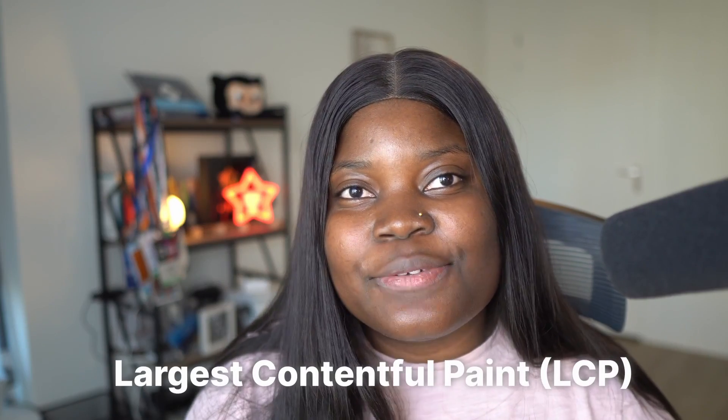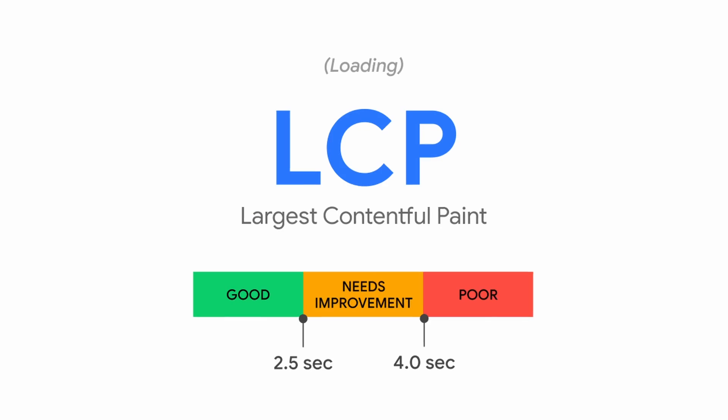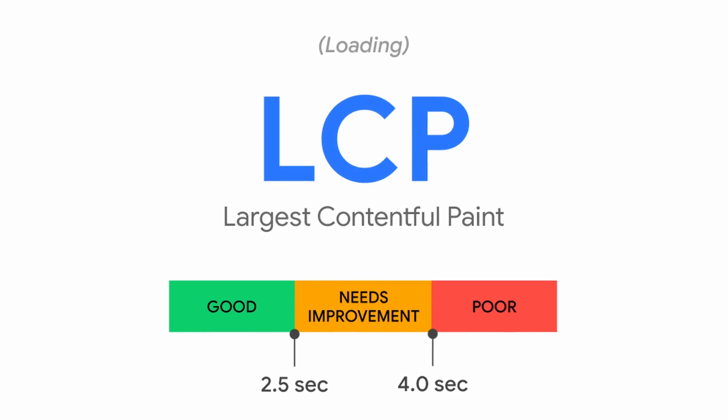The first one is Largest Contentful Paint. This metric measures the amount of time it takes to load the largest piece of content on a web page, which is usually an image or a block of text. You know you're delivering a performant site if the score for Largest Contentful Paint comes down to 2.5 seconds or less. Bear in mind that Largest Contentful Paint does not measure how long it takes to load an entire web page, but just the first block of text or image that shows up on that page.